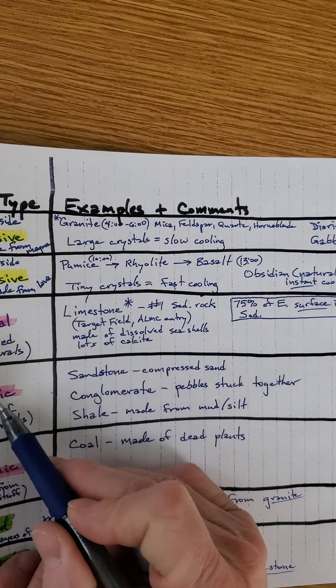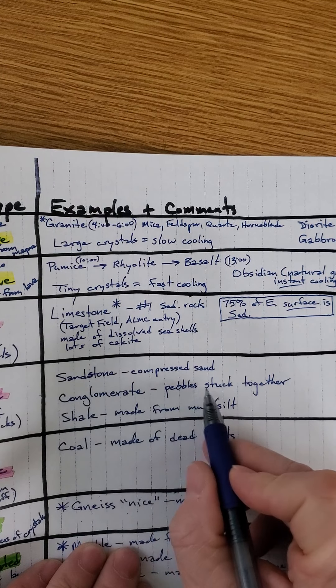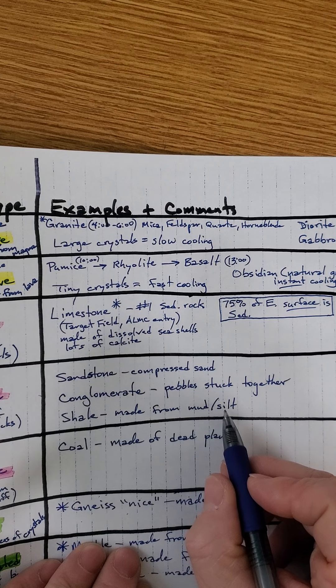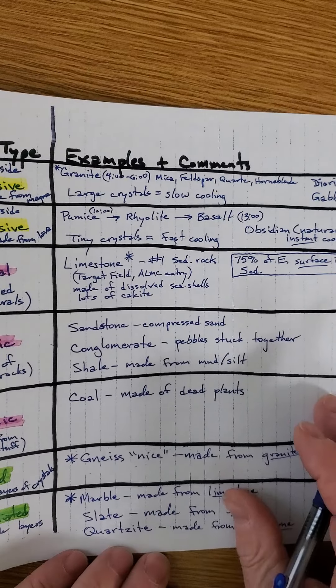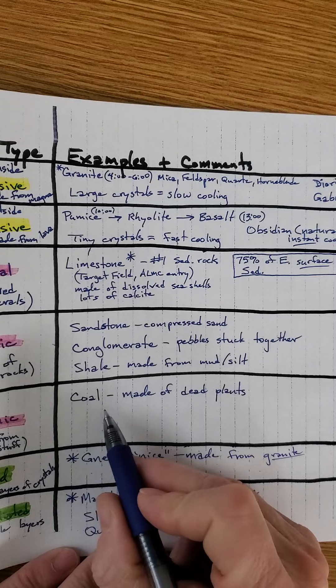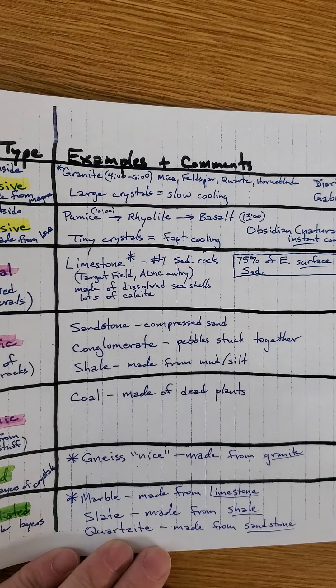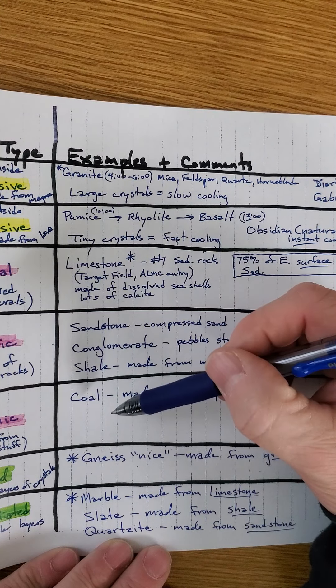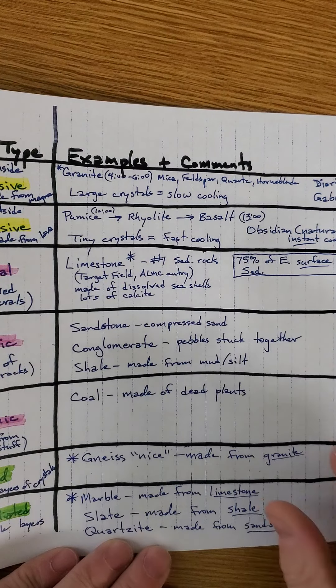Talking about clastic sedimentary rocks. Sandstone, made out of sand. Conglomerate, made out of pebbles. Shale, made out of mud. The third type of sedimentary rock is organic. Coal is made out of dead plants. These are not the only examples. These are the big ones. Some of them that we have from our rock collection.